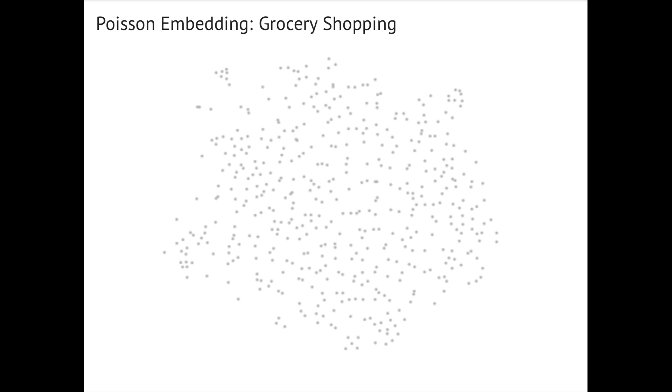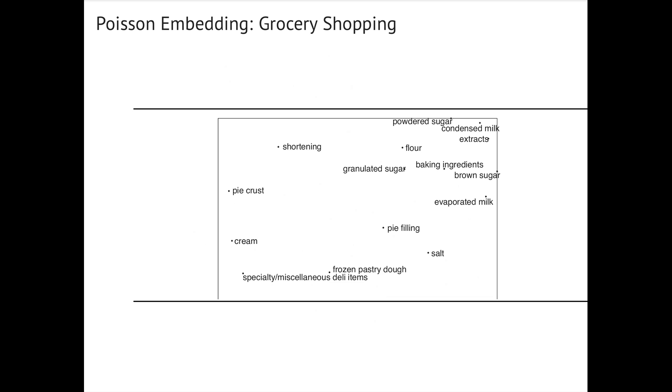And here is a Poisson embedding we fitted to grocery shopping data. Let's zoom in on a cluster. All these products are baking ingredients.